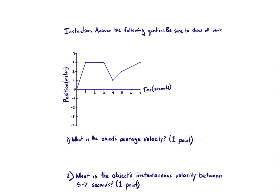Looking at this first problem, the main thing covered was the idea of velocity. Velocity is very important to physicists because it tells us where an object was going and how long it took to get there. What we've been talking about the last couple of weeks is that velocity equals the change in displacement over the change in time.